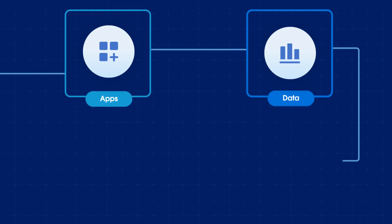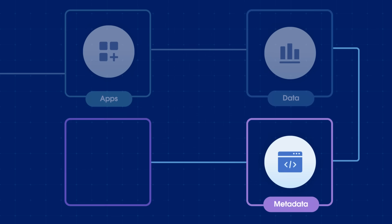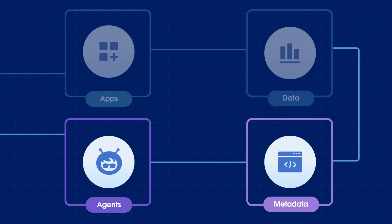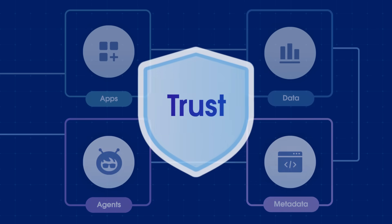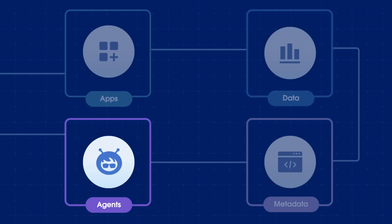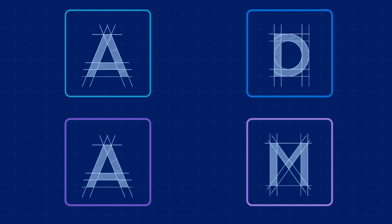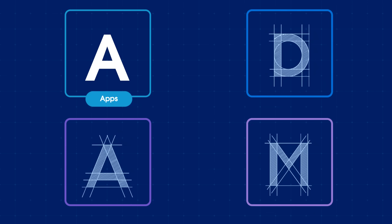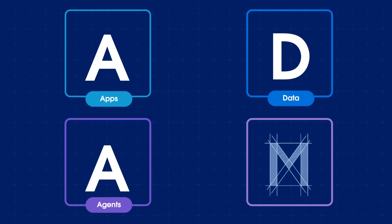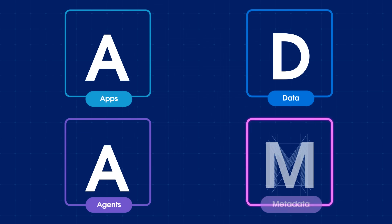And that brings us to the critical component: agents and metadata. To confidently launch autonomous agents, you need absolute trust. Your agent must operate within your systems exactly as you've designed, following the rules you've set for your data and security. Think of it with the acronym ATOM — your apps, where workflows and code come together with your data, enable your agents to accomplish tasks, all securely grounded by your metadata.